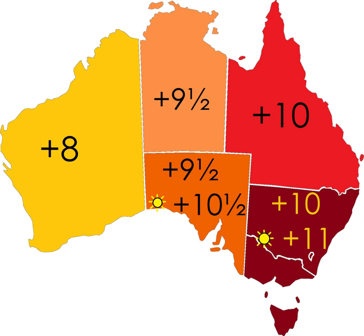Daylight-saving time is used in states in the South and Southeast: South Australia, New South Wales, Victoria, Tasmania, and the ACT. It is not currently used in Western Australia, the Northern Territory, or Queensland.